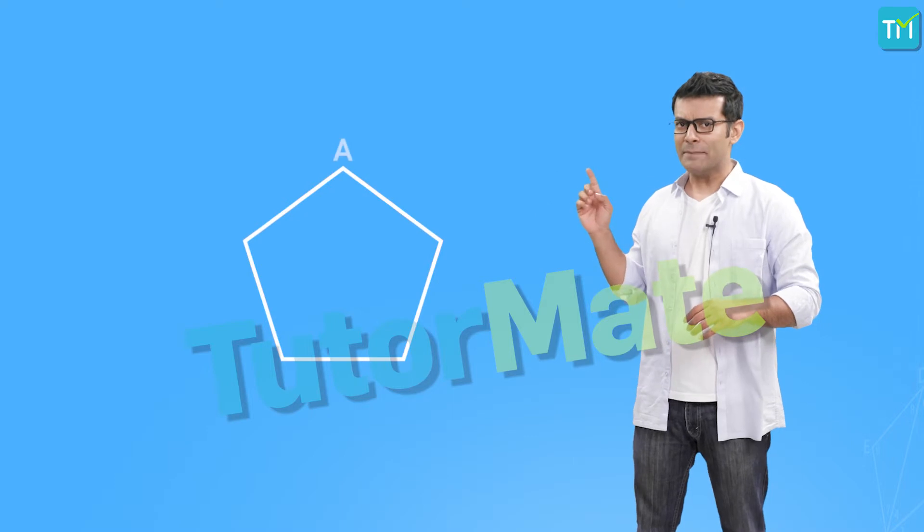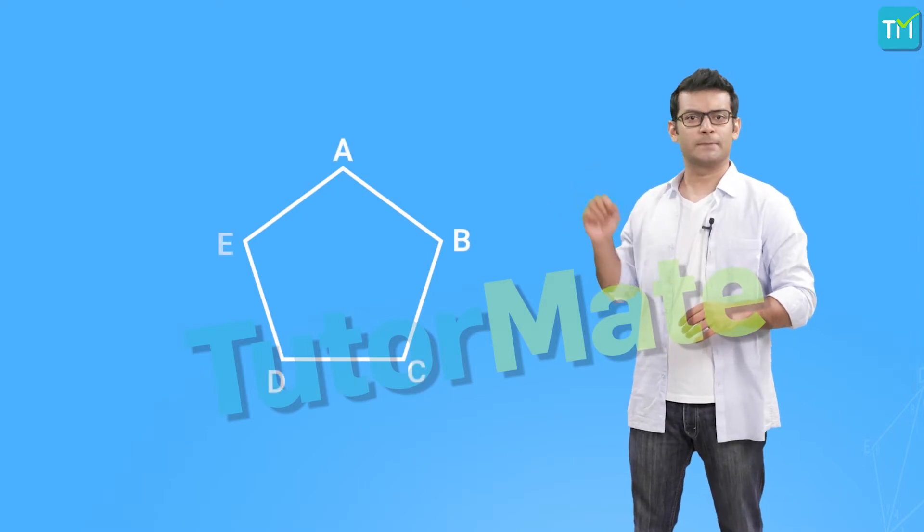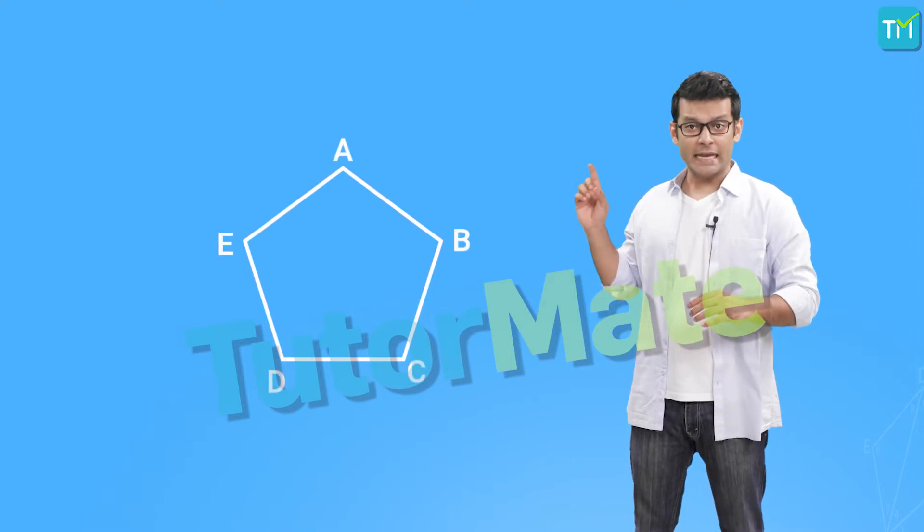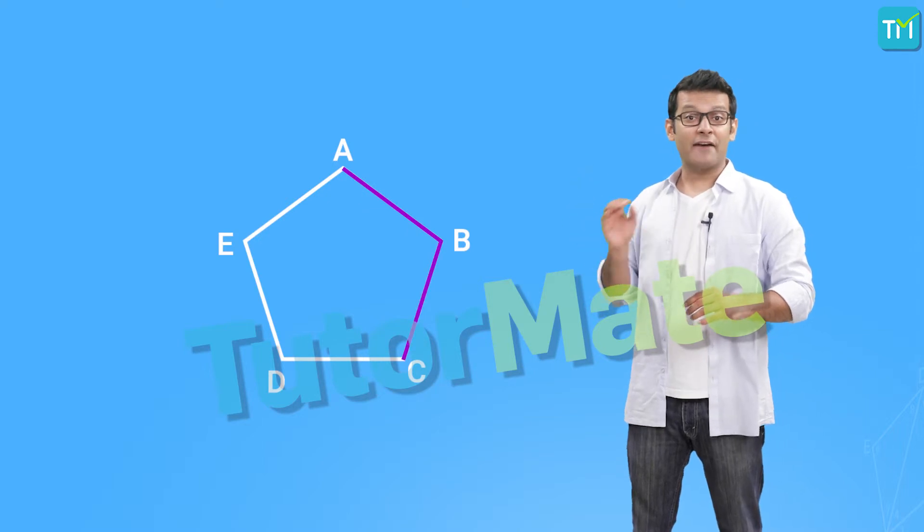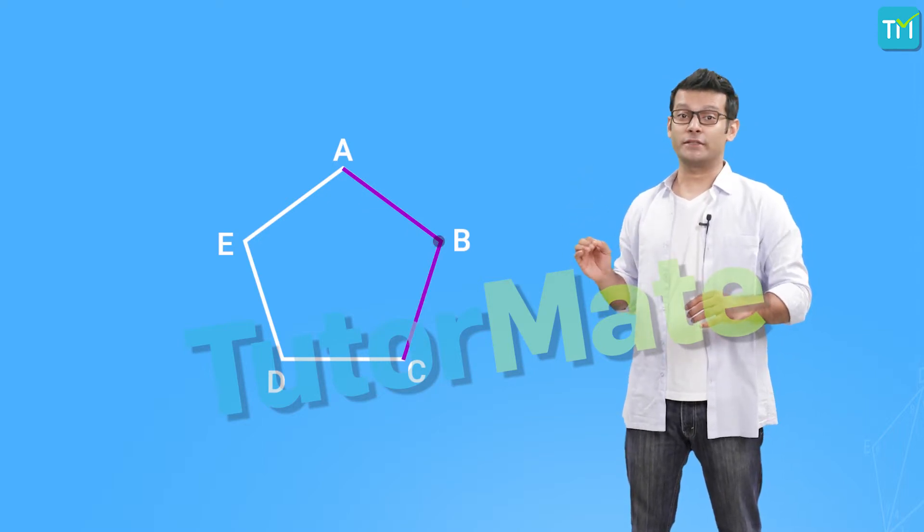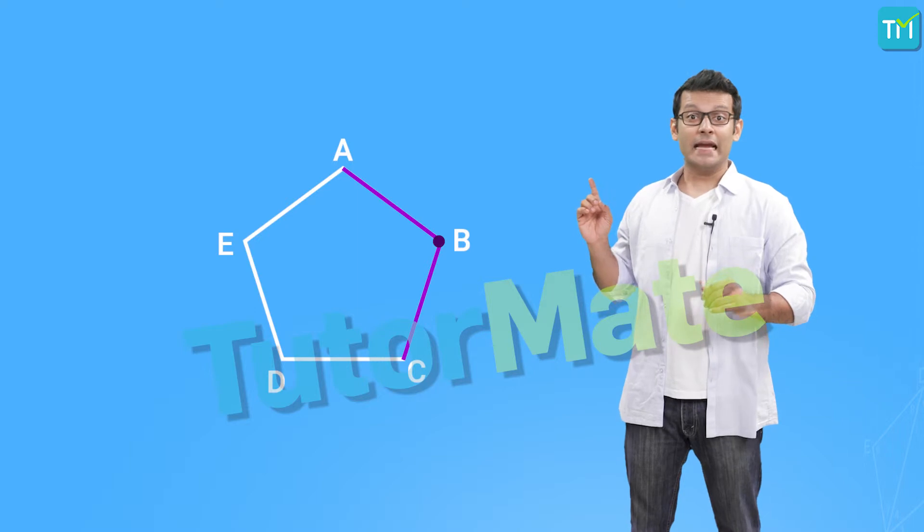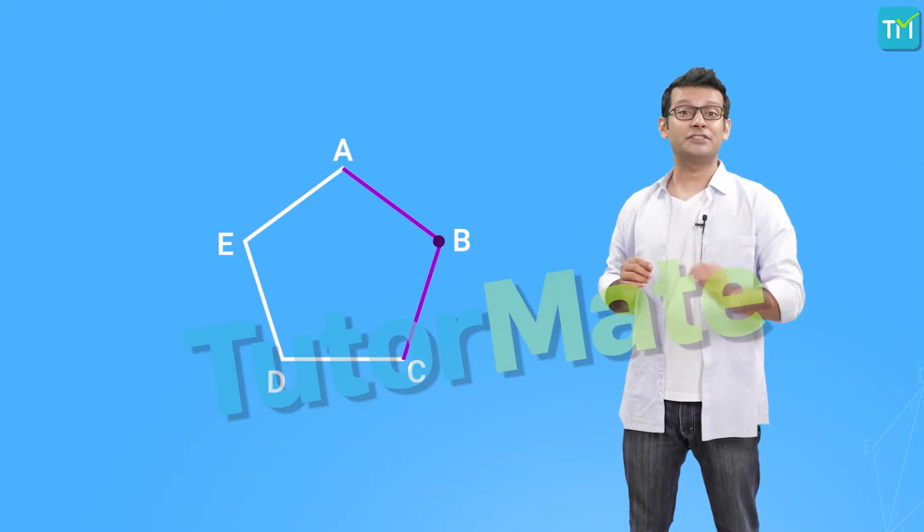Consider this polygon, A, B, C, D, E. Here, AB and BC have B as a common endpoint. So, AB and BC are called adjacent sides.